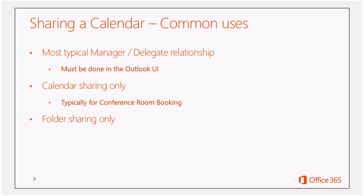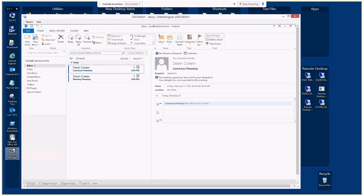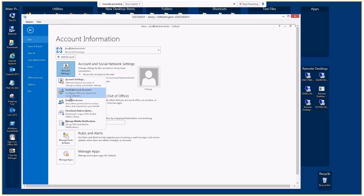Another method of sharing is one user sharing their calendar with another user. There is also a generic folder sharing feature — it's the same as sharing a calendar but with other types of folders such as email, contacts, or tasks. Let's take a look at that. For the manager-delegate settings, we assign this through the Outlook UI by going to File, Account Settings, and Delegate Access.